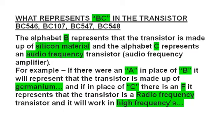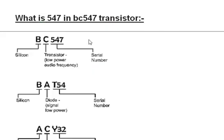Now discussing what is BC547: 'B' represents silicon, 'C' represents transistor — that is low frequency or audio frequency. In BC547, '547' is a serial number, and '548' is also a serial number. Another example is BAT54 — here 'B' is silicon, 'A' is a diode signal low power, and 'T54' is a serial number. There are different types of transistors.